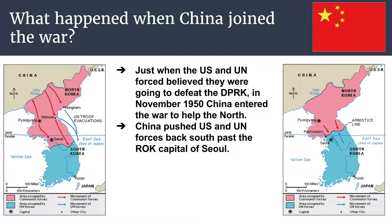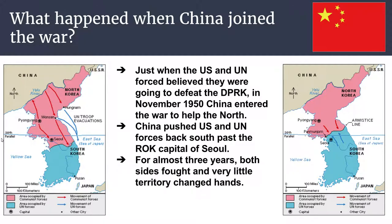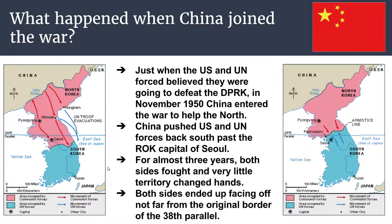The Chinese forces pushed US and UN forces back south of Seoul. The 38th parallel was the original border between North and South Korea. At this point, Chinese and North Korean forces pushed the South Korean and American forces south of the capital — Seoul changed hands multiple times. In fact, Seoul changed hands four times during this war. For almost three years, both sides fought to a standstill and very little territory changed hands.